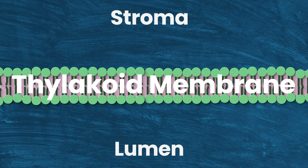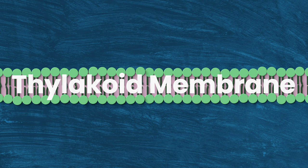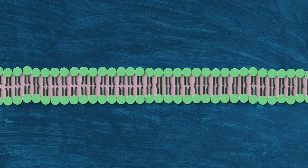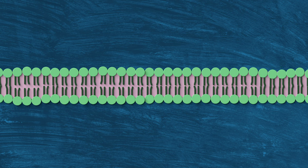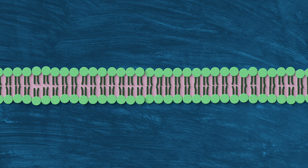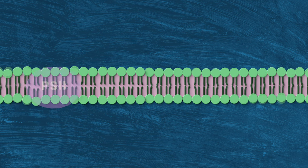But between the stroma and lumen, you've got the thylakoid membrane, which is your standard phospholipid bilayer. This barrier creates the concentration gradients needed to power the latter parts of photosynthesis, and straddling that membrane is the focus of today's video, PS2.